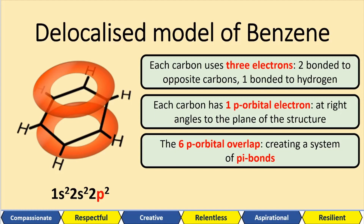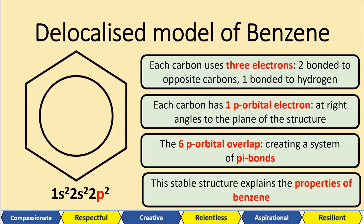Pi bonds — you can kind of think of it like a doughnut — two doughnut structures, one on the top and one on the bottom. The p orbitals have overlapped, creating these pi bonds, and this forms a stable structure. This delocalised structure of electrons — delocal means that the electrons don't stay in one local area, they're moving around. Because of this delocalised structure, benzene is actually more stable than what we would expect if it had alternating single and double bonds. This is what explains the stable structure and properties of benzene — so it doesn't undergo electrophilic addition.